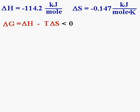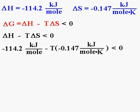What we're really looking for, then, are the temperatures for which delta H minus T delta S is less than zero. Well, we have delta H and delta S, so we can just plug them into the equation. Negative 114.2 kilojoules per mole minus T times negative 0.147 kilojoules per mole K must be less than zero.